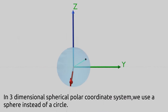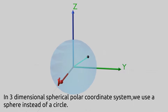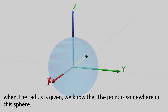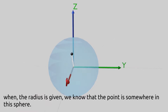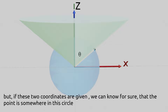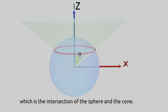In the three-dimensional spherical coordinate system, we use a sphere instead of a circle. When the radius is given, we know that the point is somewhere in this sphere. Given the angle the radius makes from the z axis, we know that it is in this cone. But if these two coordinates are given, we can know for sure that the point is somewhere in this circle, which is the intersection of the sphere and the cone.